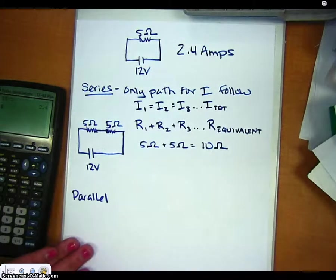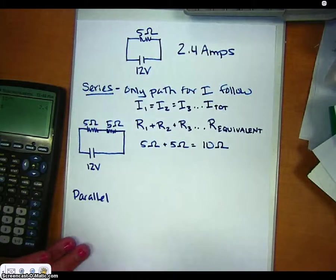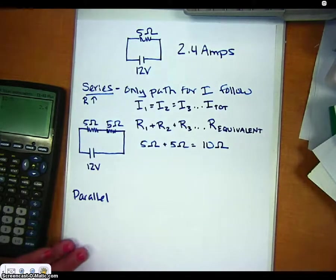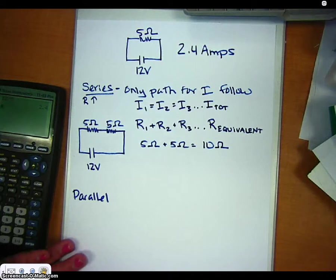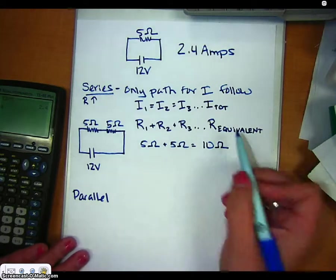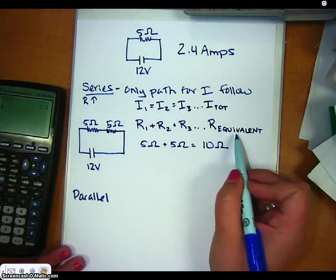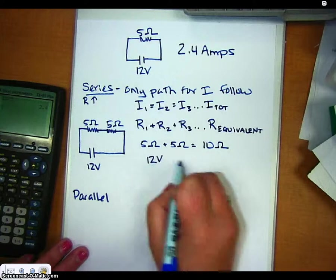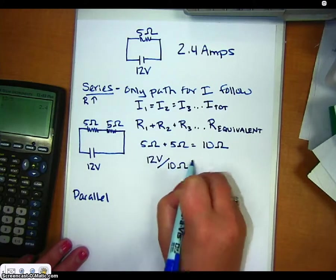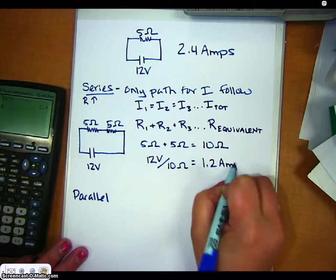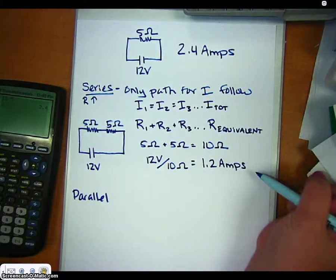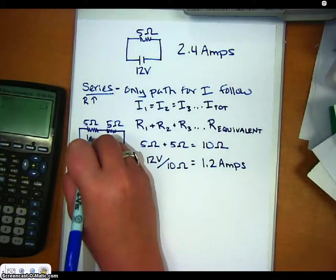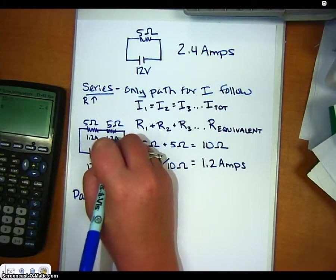So putting resistors in series actually is going to cause the resistance to increase. So resistance goes up. Now I can use Ohm's Law to figure out what is the total current since I have the total resistance or equivalent resistance. I can just use V equals IR and take 12 volts and divide it by 10 ohms and I get 1.2 amps. So this is the current in the entire circuit. And since the current is the same everywhere, it would be 1.2 amps here and 1.2 amps here.